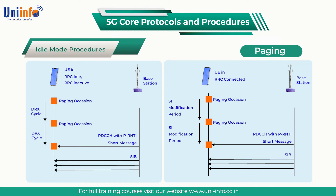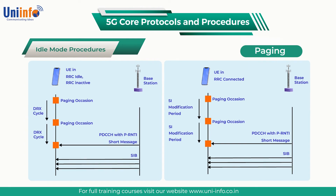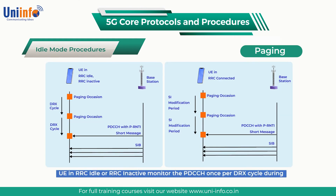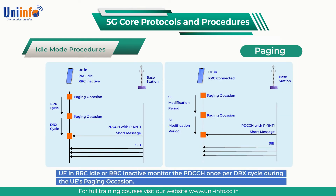Instead, the paging procedure uses only the payload of the PDCCH. Downlink control information DCI format 1-0 can include a short message when the CRC bits are scrambled using the P-RNTI. This short message can be used to indicate that system information has been updated and needs to be reacquired, or that there is an incoming ETWS message. UEs in RRC idle or RRC inactive monitor the PDCCH once per DRX cycle during the UE's paging occasion.